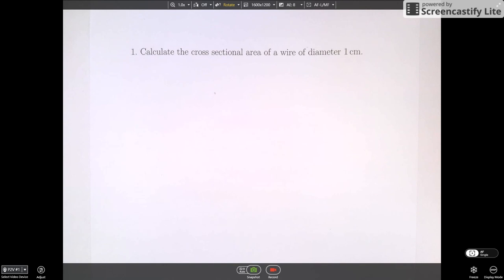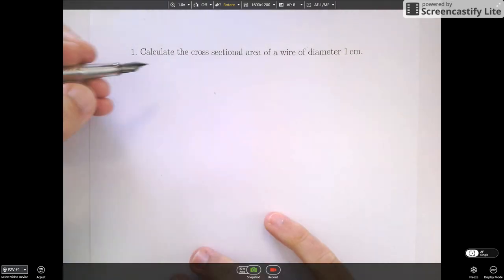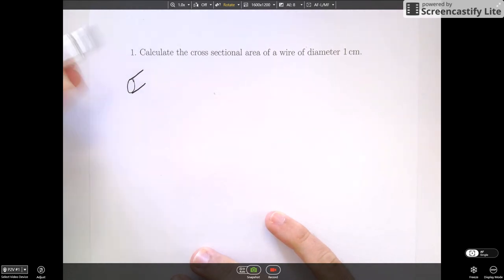Let's imagine we've got a question like this: calculate the cross-sectional area of a wire of diameter 1cm. So quite a common question that could come up in AS Physics. A good student would draw a diagram first and they'd realize that the cross-sectional area that's wanted is this area on the end, and that shape is a circle.